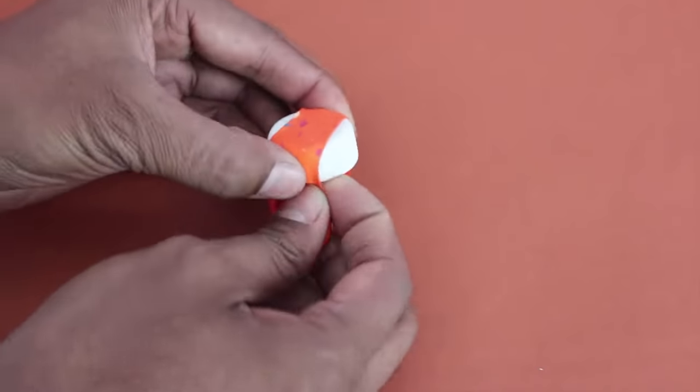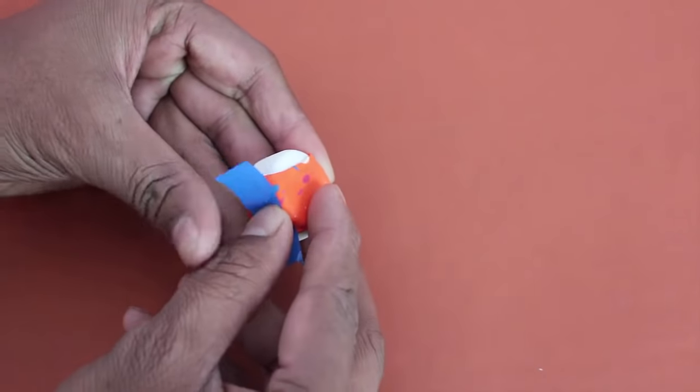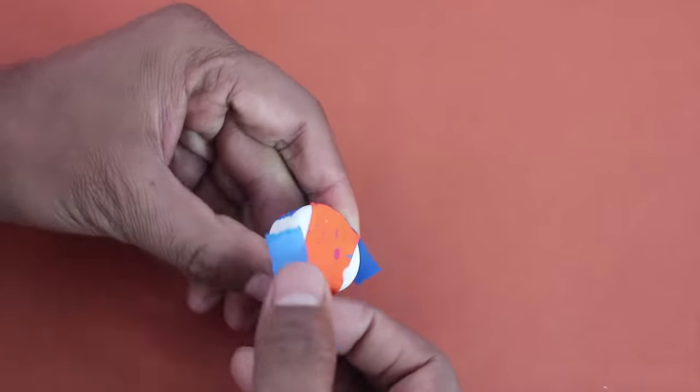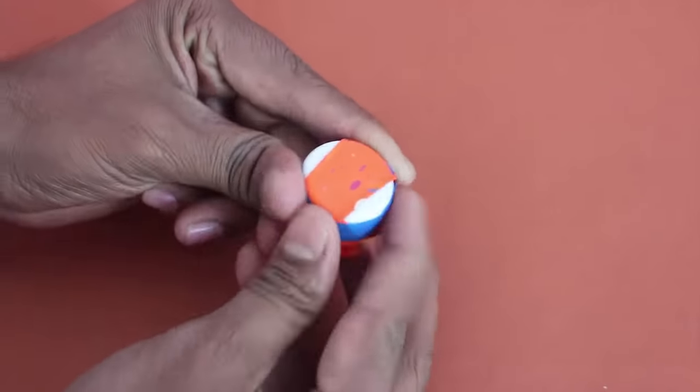Stretch out a small balloon on the flat surface of the lid and tape the ends of the balloon on the rim of the lid.